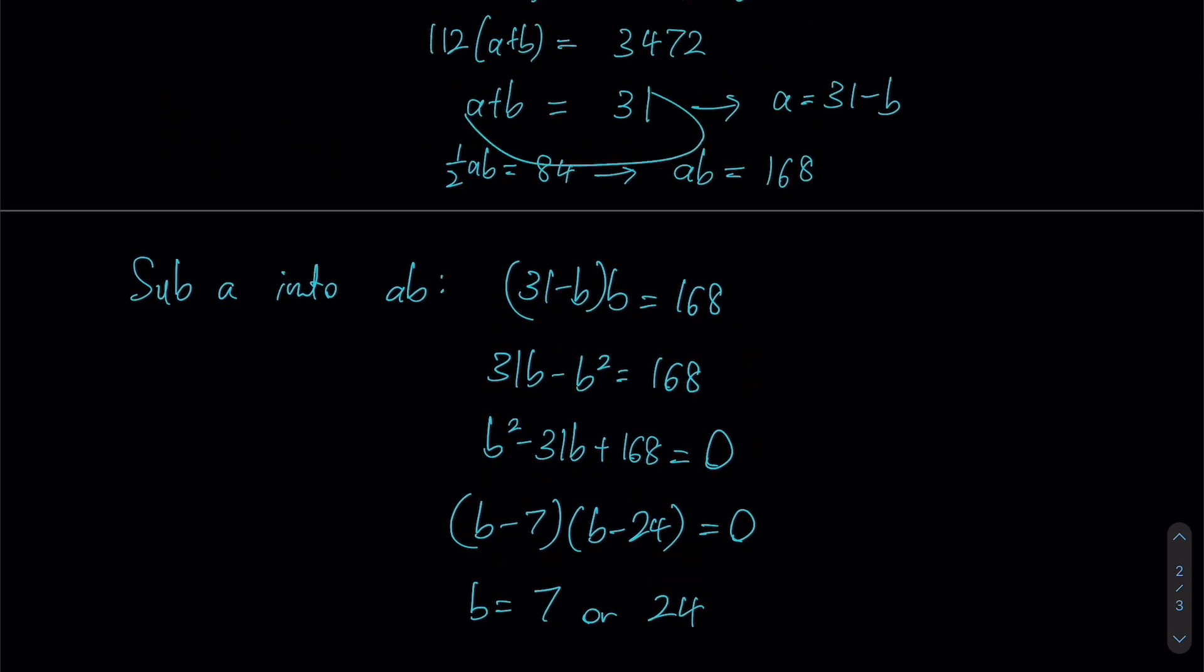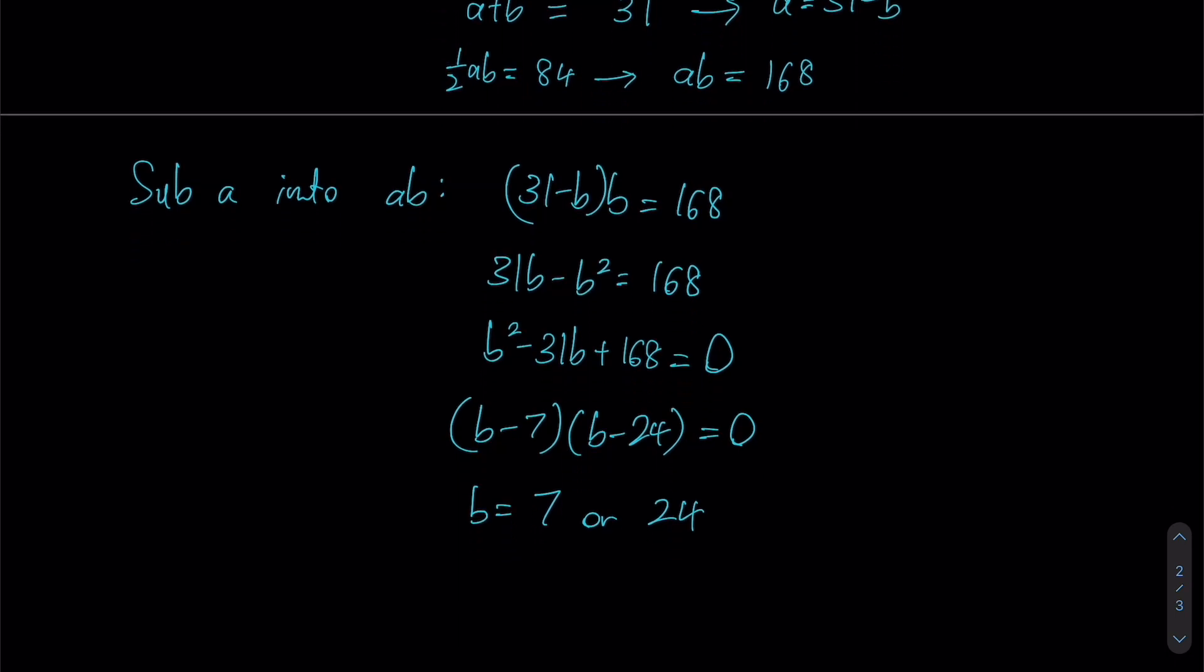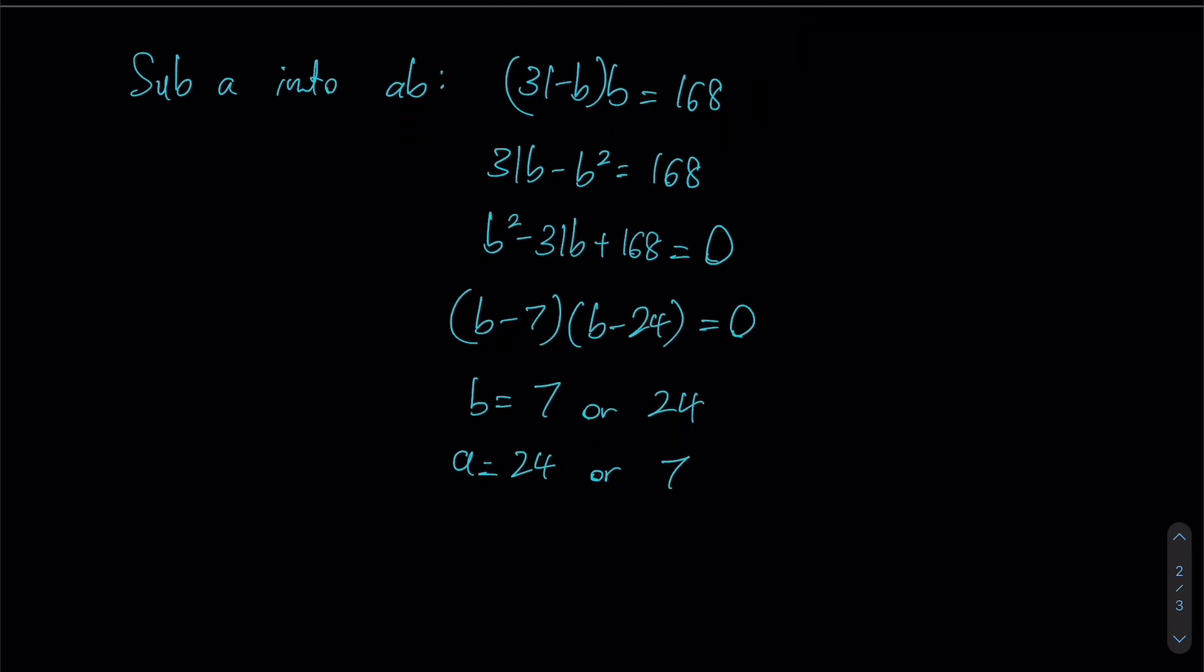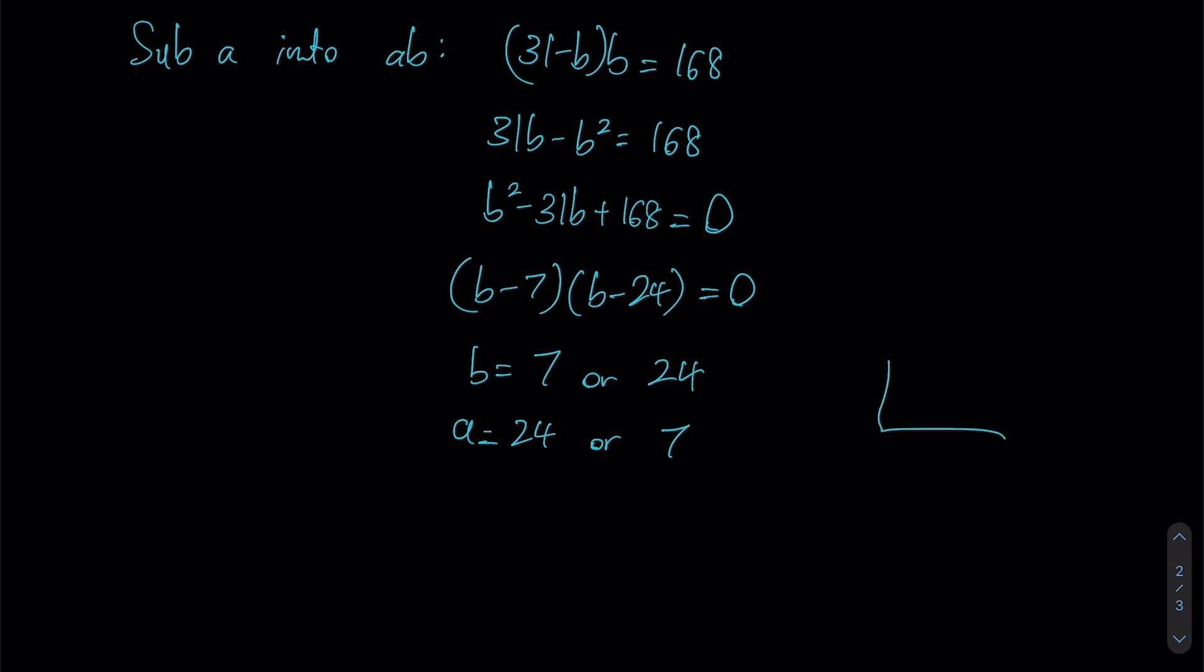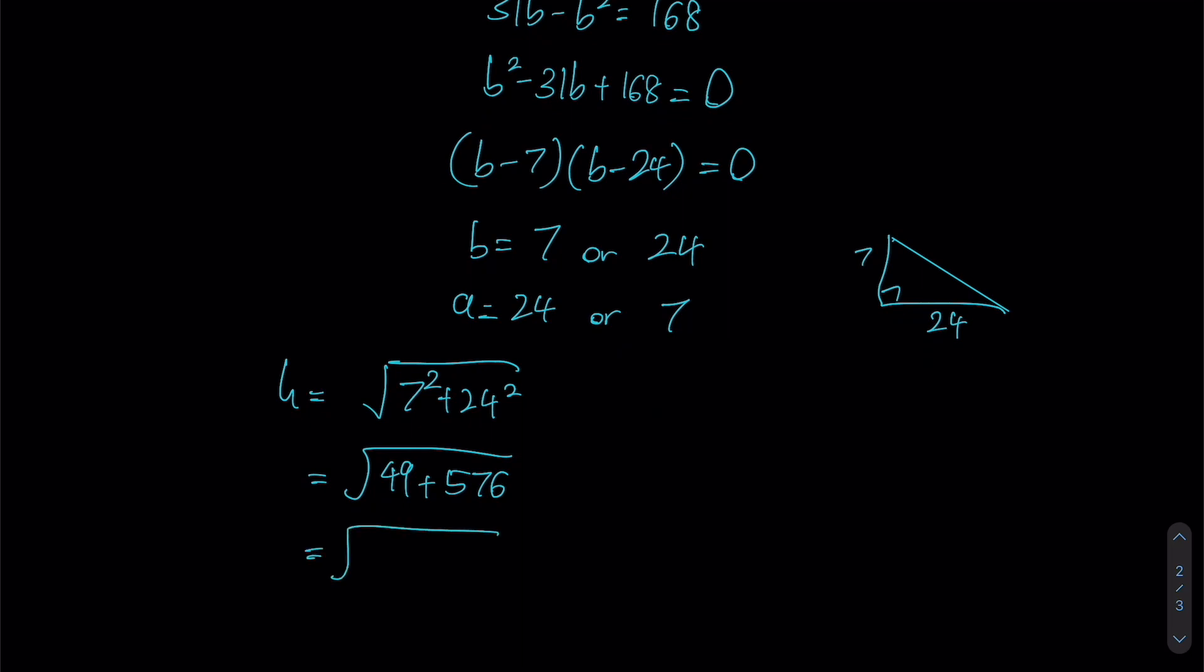Now since earlier we stated that the sum of A and B is 31, if B is 7, A must be 24. If B is 24, A must be 7. So over here, you realize that the specifics don't really matter. All we need to know is that our perpendicular sides here, the shorter one is 7 and the longer one is 24. And therefore, if we are to draw our hypotenuse, we will be able to figure this out via Pythagoras theorem. So 7 squared plus 24 squared, square root, this is the square root of 49 plus 576. And square rooting this will give us square root of 625. We should notice that this is a square number, and therefore our hypotenuse is actually equals to 25.